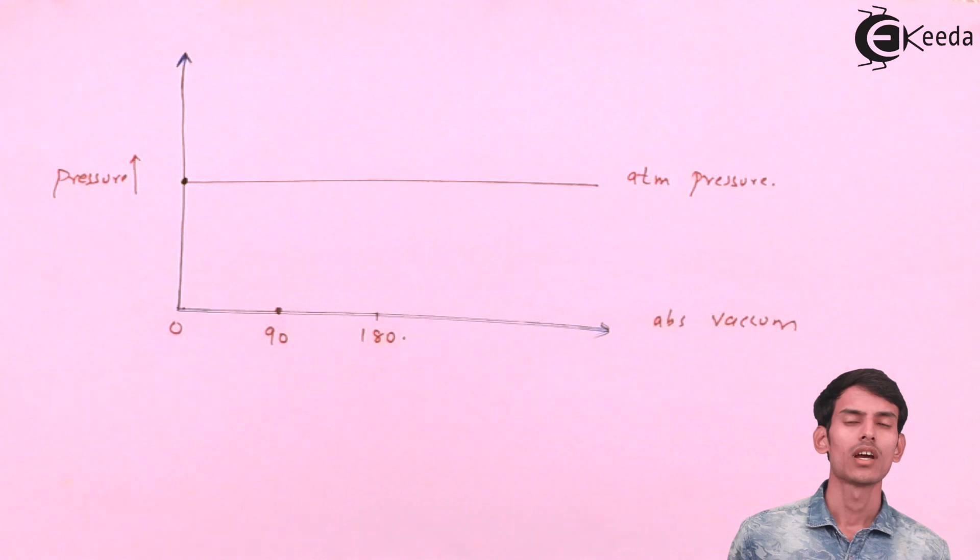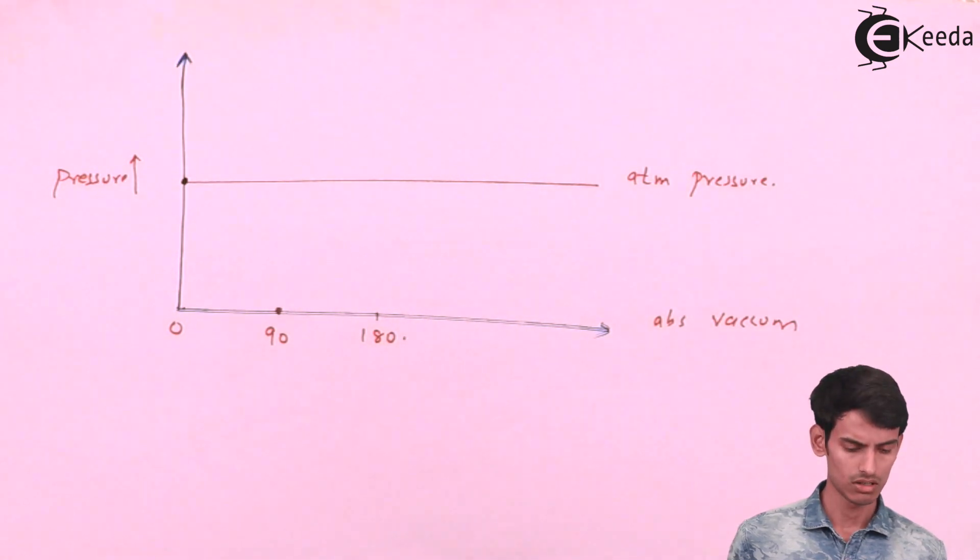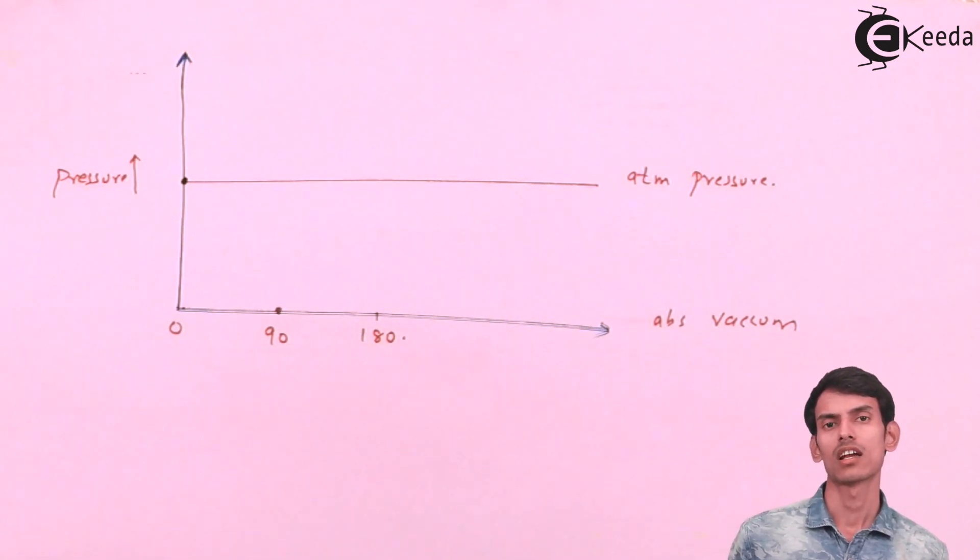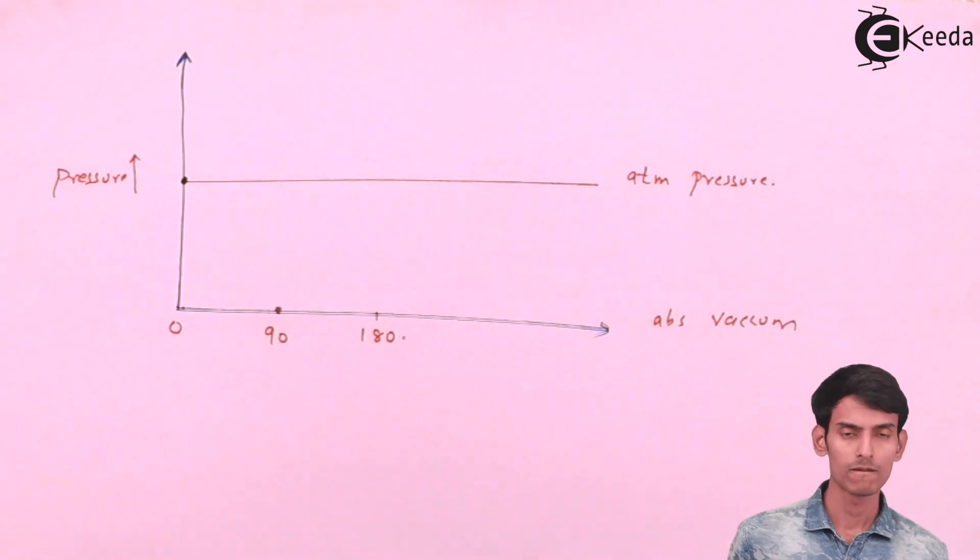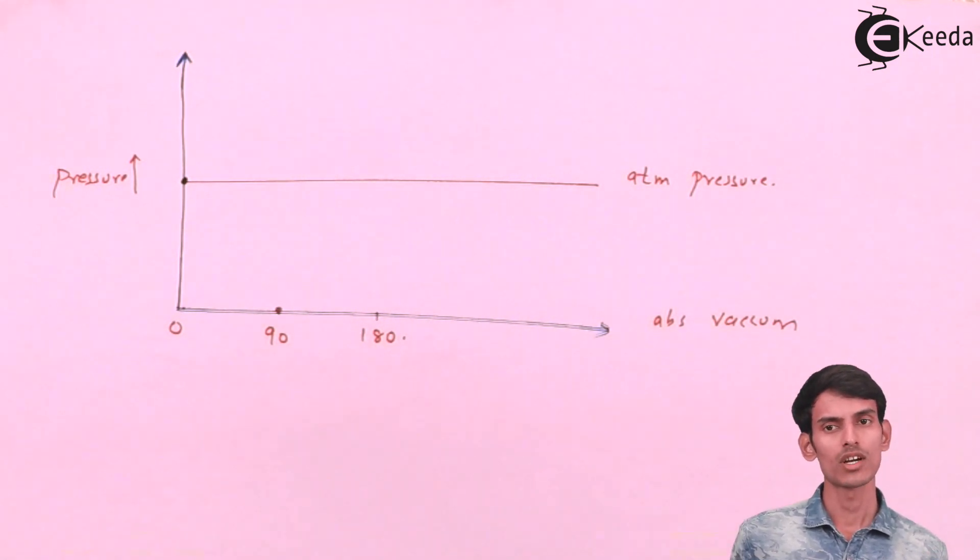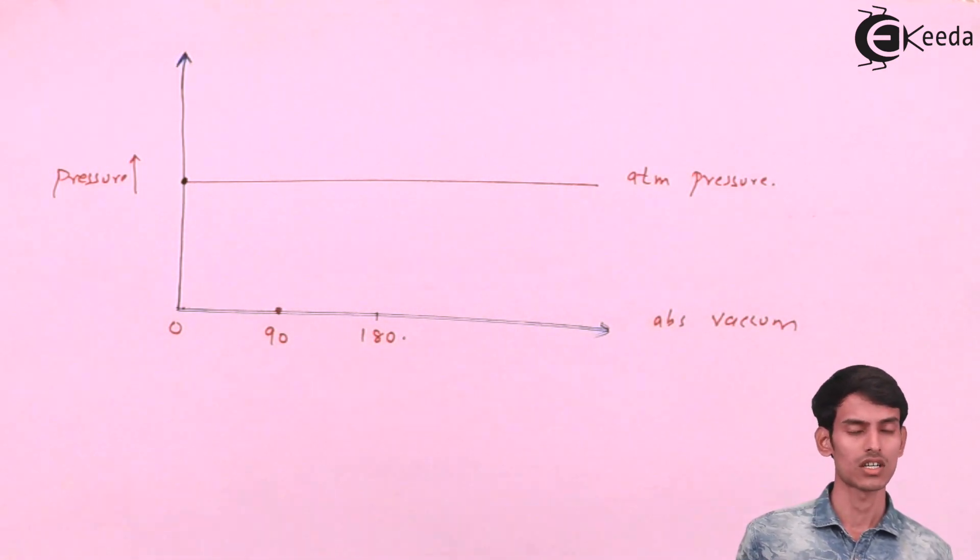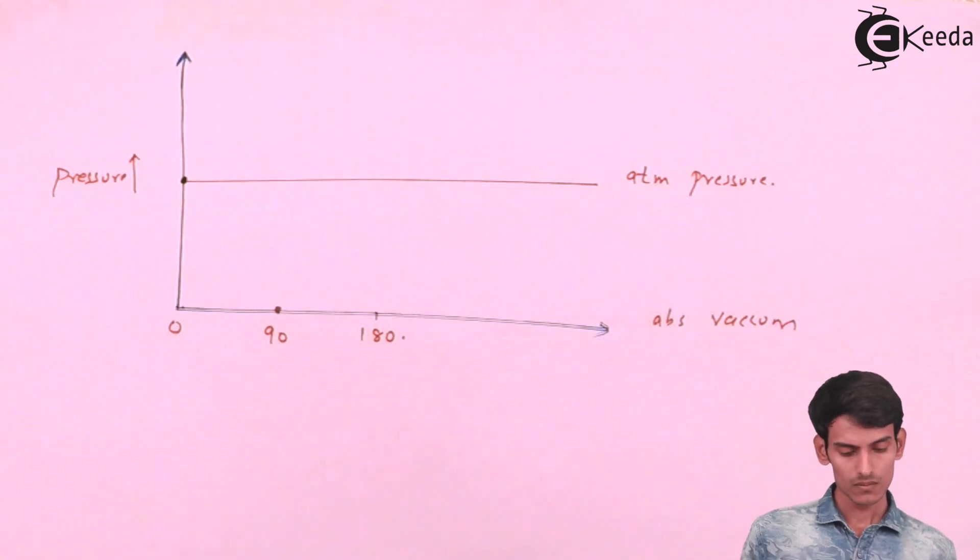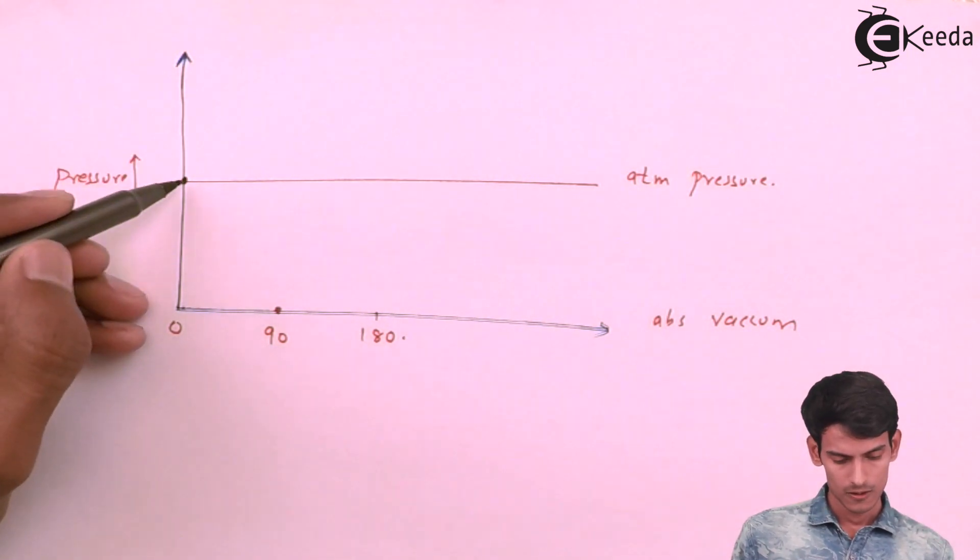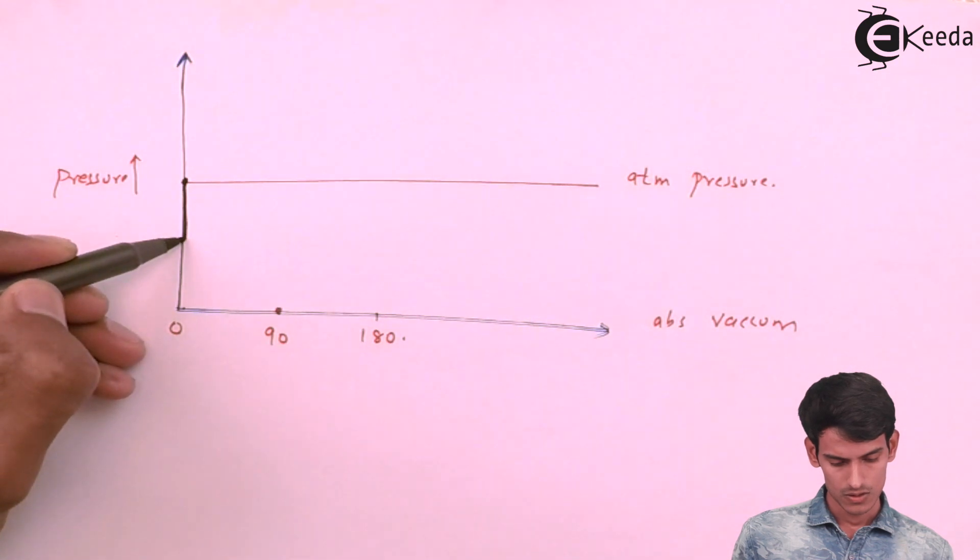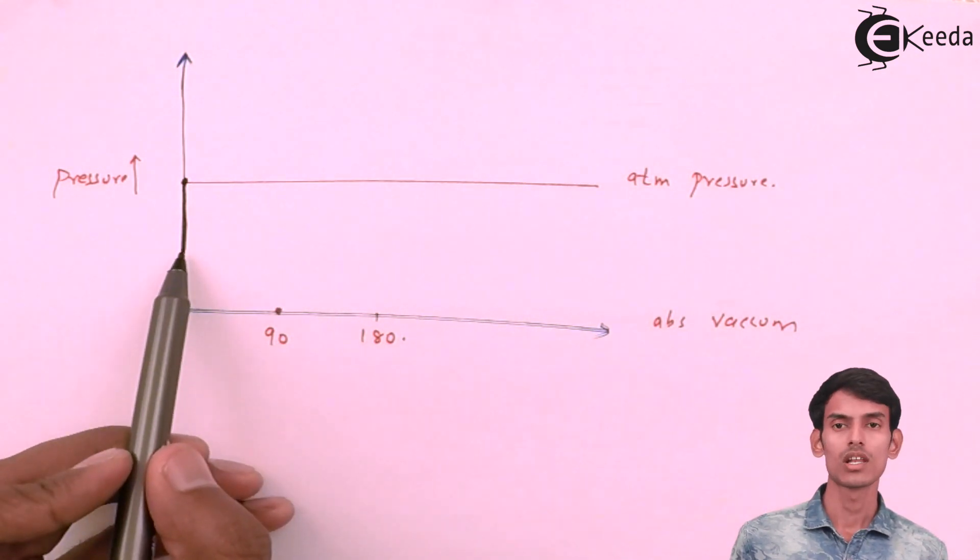Now, when we drew the indicator diagram earlier, we had like a rectangle kind of thing. Because that time we only had HS and HD. So now, when I am drawing, we have already seen the effect of acceleration now. So there is one more head that comes in that is HAS, the effect of acceleration at the suction side. So when the pump is creating vacuum, it has to create vacuum that is equal to HS plus HAS.